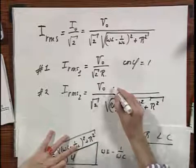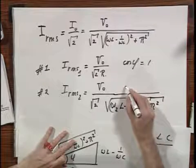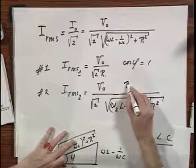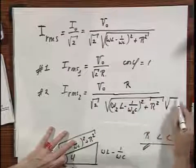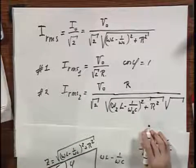But I also must multiply by the cosine of phi. And the cosine of phi equals R divided by that same square root. So the square root occurs twice.